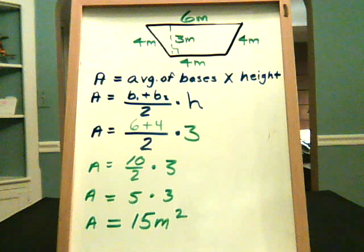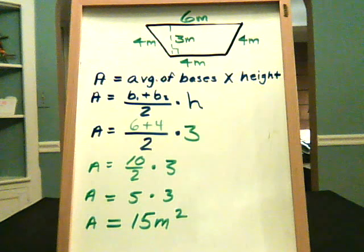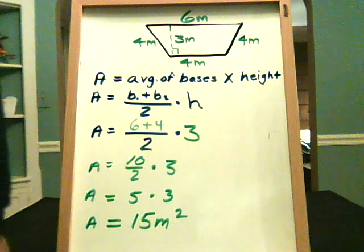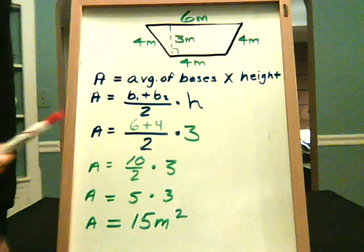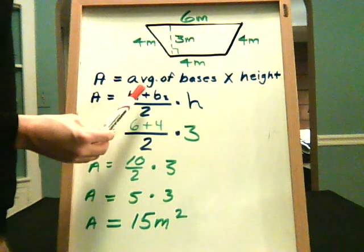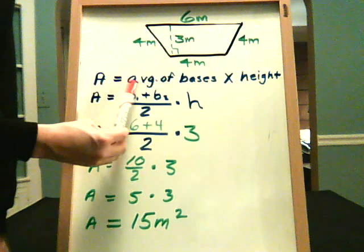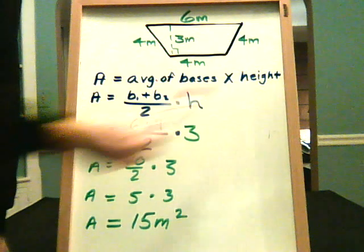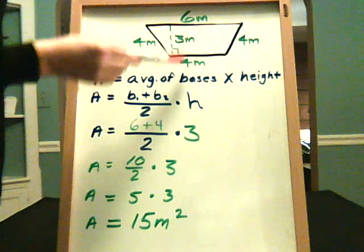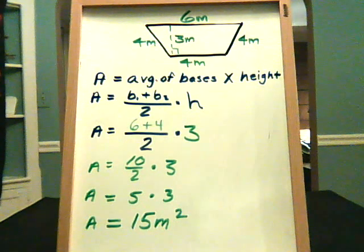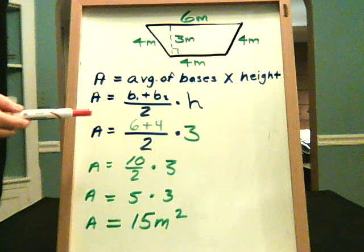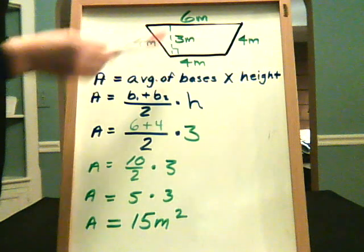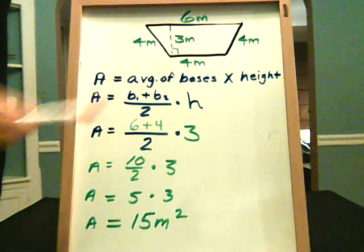Now the formula for the area of a trapezoid, which area means the measurement inside, is the area equals the average of the bases times the height. So now you have two bases and they're two different lengths. So which one are you going to use? Well you're going to use both of them. You're going to find their average and then multiply times the height, which is the three meters.